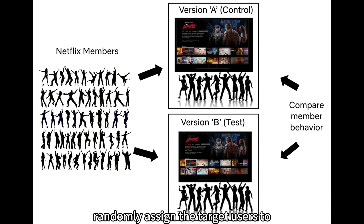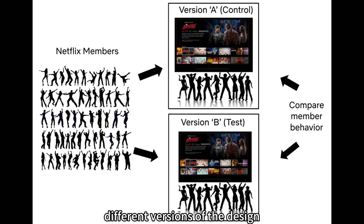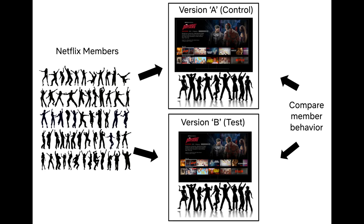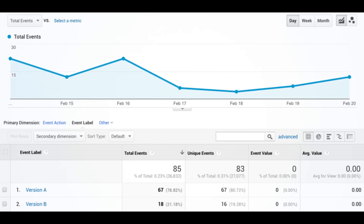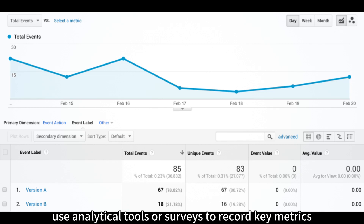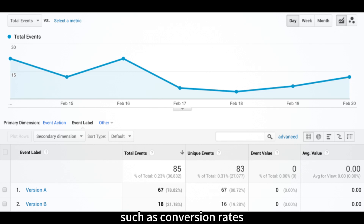Random Grouping. Randomly assign the target users to different groups and show them different versions of the design. This ensures the credibility of the testing results. Collect Data. During the testing, gather user behavior and feedback data. Use analytical tools or surveys to record key metrics, such as conversion rates, click-through rates, and dwell times.